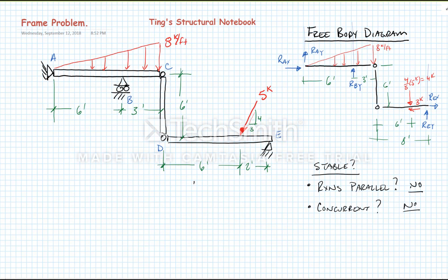So the next step is determinacy. Remember, our check for determinacy is the number of unknowns has to be equal to three times the number of members. So let's look at this. In this case, we have three members, n equals three, so this side of the equation is three times three equals nine. And now we have to look at the number of unknowns.